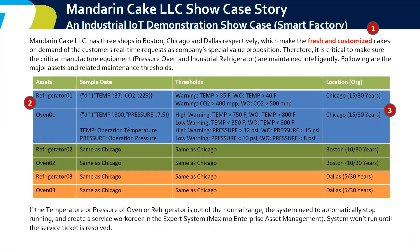The showcase story. This is a cake factory story — a Mandarin cake factory that makes fresh and customized cakes based on customer orders. Therefore, it is mission critical to make sure the equipment is continuously running without any interruption or problems. IBM Maximo is perfectly matched for this situation.